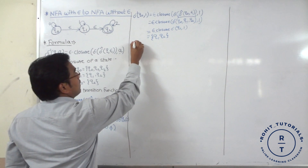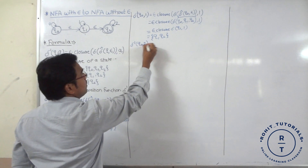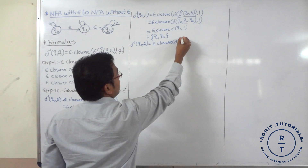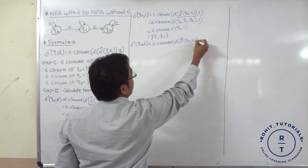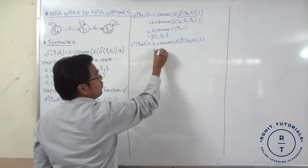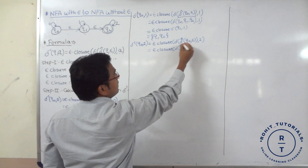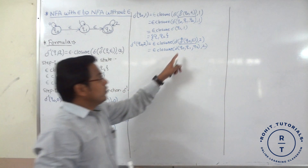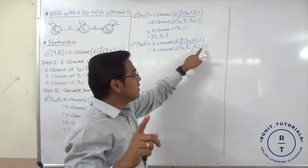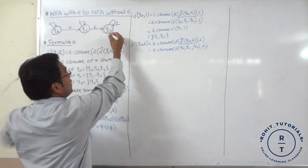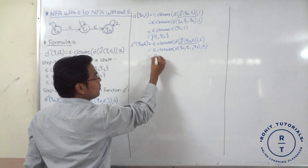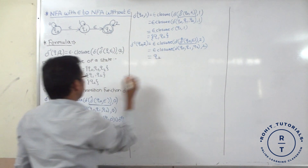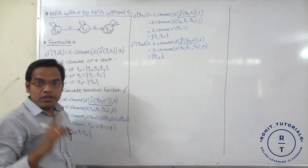Next, delta dash of Q0 with input 2. Applying the formula: epsilon closure of delta cap of Q0 with epsilon, then input 2. Epsilon closure of Q0 gives {Q0, Q1, Q2}. We compute the transitions for Q0, Q1, Q2 with input 2 and take the union. Q2 transition for input 2 gives Q2, so that is why the result is Q2. All transitions for Q0 are now completed.